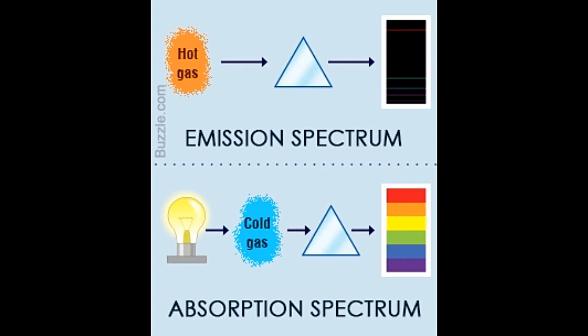The basic difference between emission and absorption spectrum is, as the name suggests, emission and absorption of light. Sounds simple? But there's more to it. Did you know some parts of the light spectrum can be seen by animals but not by humans? For example, certain insects can see UV light, while we cannot.